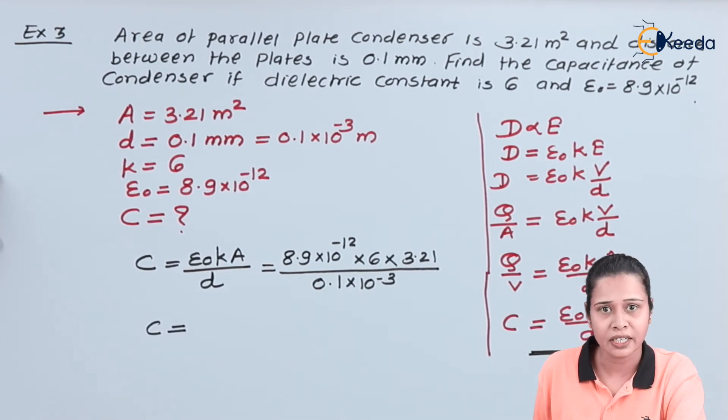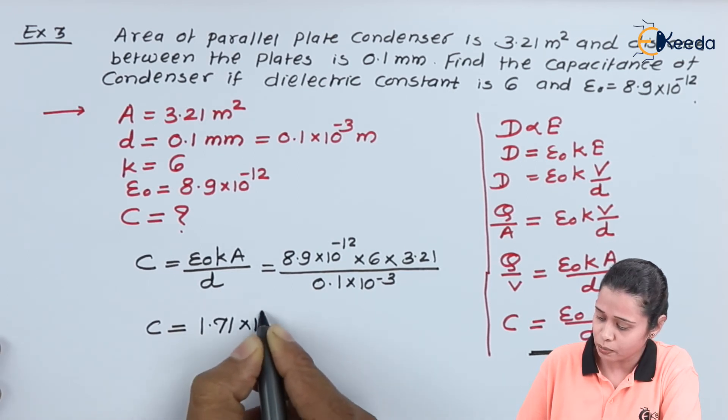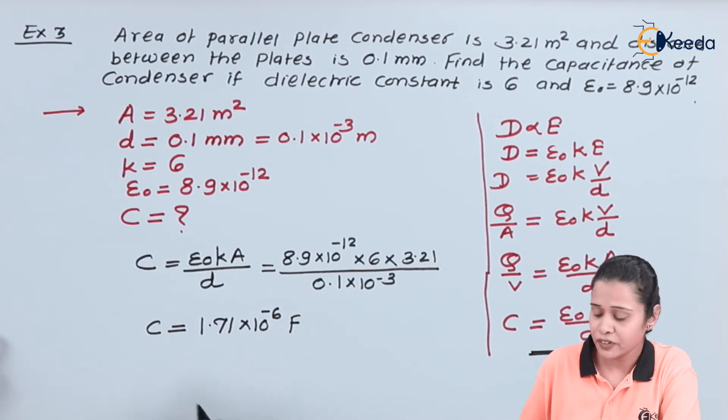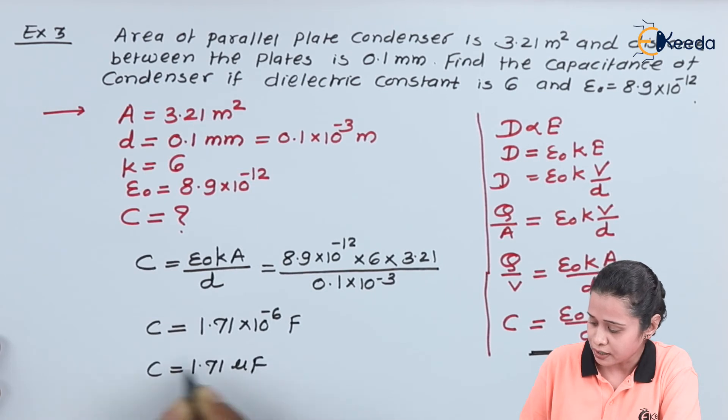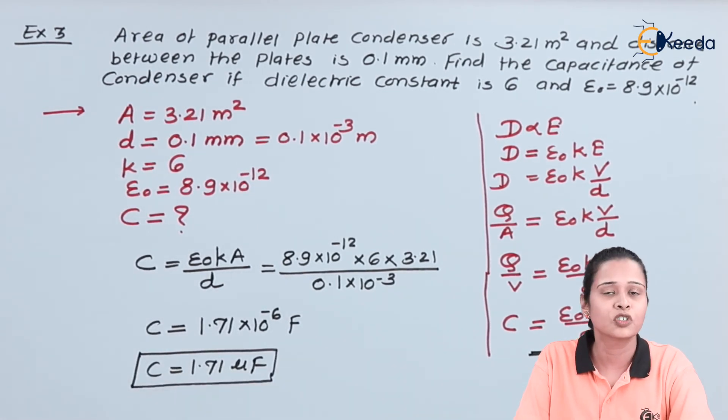After solving this we will get answer 1.71 into 10 raise to minus 6 farads, or here we can write C is equal to 1.71 micro farads. So in this way we can solve the numerical.